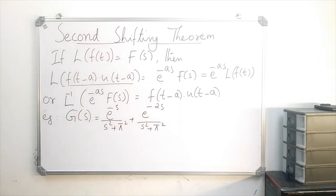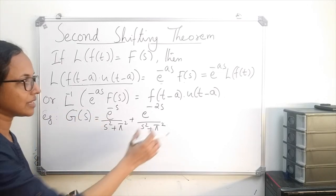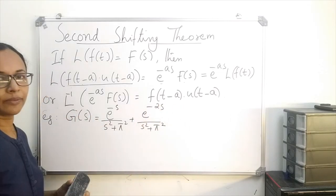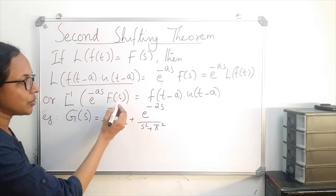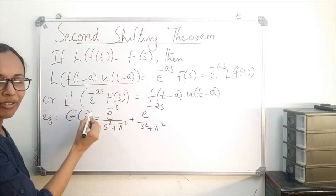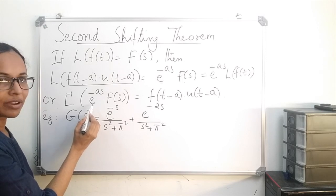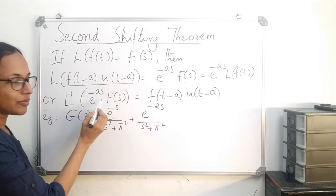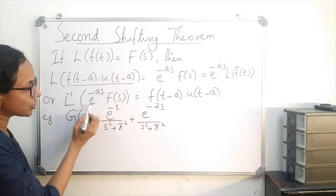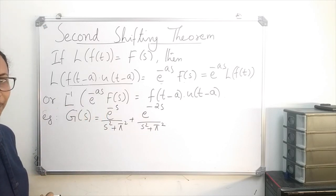So that's what I have written here. The inverse Laplace of e raised to minus as into f of s is f of t minus a times u of t minus a. We can use this formula for finding the inverse transform of a function which is multiplied by e raised to minus as.